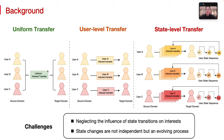However, conventional CTR methods often indiscriminately transform interests for users, and despite some proposals for user-level interest transfer, these approaches generally overlook how a user's evolving state in the target domain can also affect their interests in the source domain.